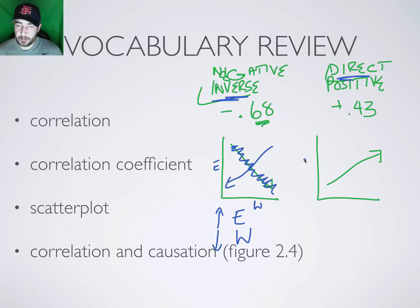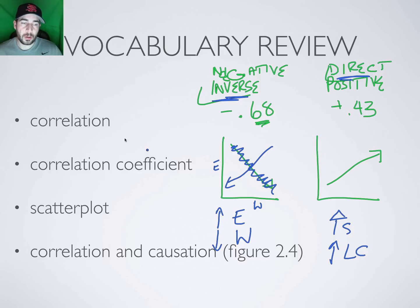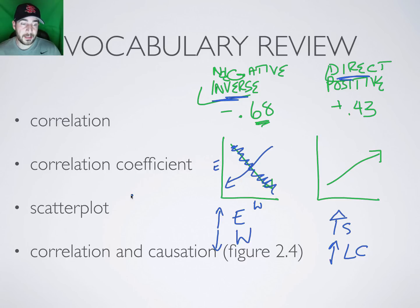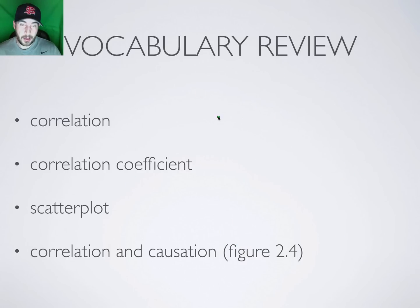A direct correlation would be the smoking example: as the amount of smoking goes up, incidence of lung cancer also goes up — both variables move in the same direction. A scatter plot is what we use to get these correlations from. It's just a bunch of little data points, and that's how we determine our correlations. Each dot might represent one person's weight and exercise level.